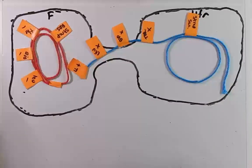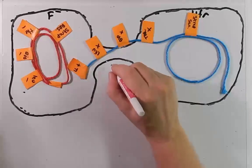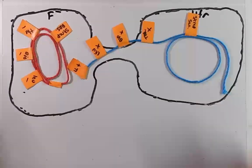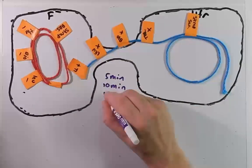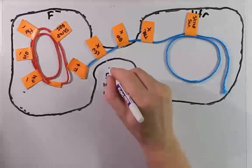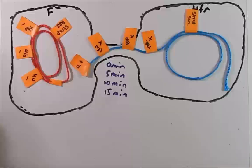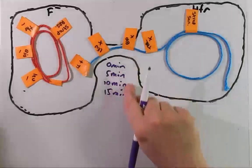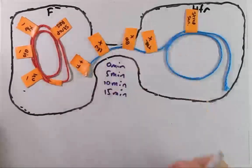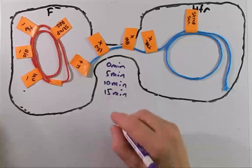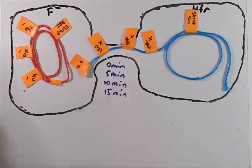For this experiment we're going to use three time points: five minutes, ten minutes, and fifteen minutes — and also zero minutes, so we know what we started with. At each of these time points, when we break the sex pilus, we want to know which genes transferred. So we're going to plate them on a variety of media at each time point.